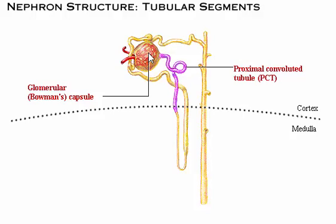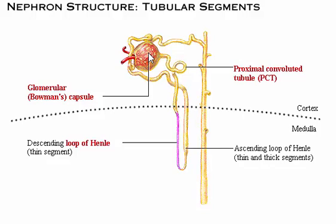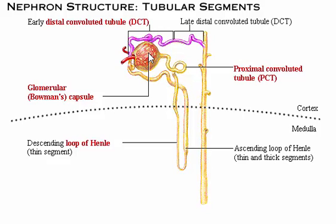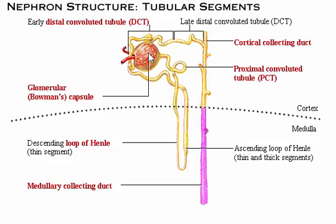After many loops and convolutions, the tubule straightens out and fluid flows down the descending or thin segment of the loop of Henle into the medullary region, and then up the ascending or thick segment back into the cortical region. From the loop of Henle, the fluid enters the early and late distal convoluted tubule, or DCT, eventually emptying into a cortical collecting duct, which extends into the medulla, forming the medullary collecting duct, carrying urine through the renal pyramids to the renal pelvis.